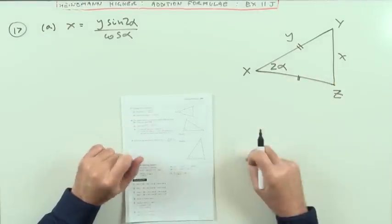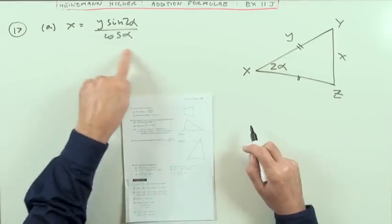Number 17. Triangle X, Y, Z is isosceles. Prove this within the triangle.